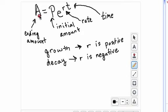A is the ending amount. P is your initial amount. E is actually a number, 2.71828 or something like that. So I know it's 2.7. And then it's continuous, like pi. And then R is your rate and T is your time.